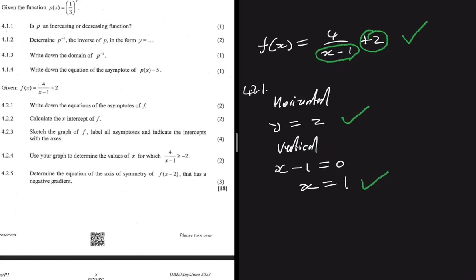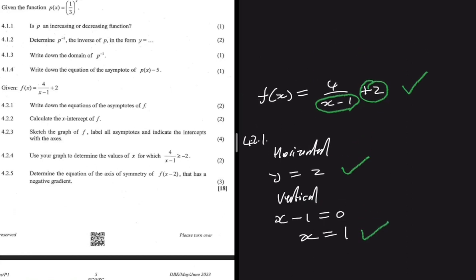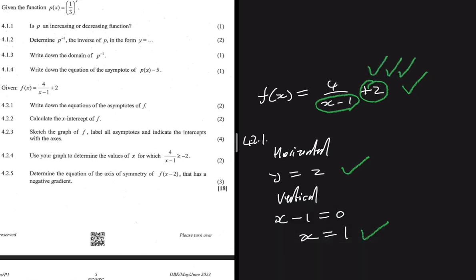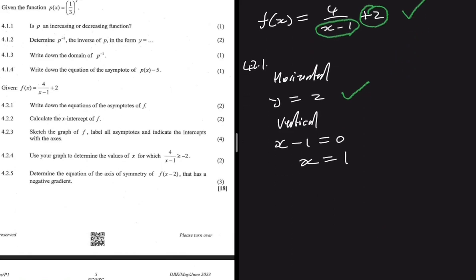So we have our horizontal asymptote and our vertical asymptote — that is 4.2.1. The value added at the end of the function will always be your horizontal asymptote; if it was minus 3, then our horizontal asymptote would be minus 3. Now moving to 4.2.2, the question asks us to calculate the x-intercept of f.